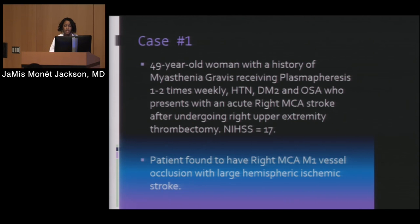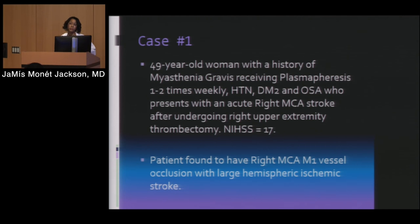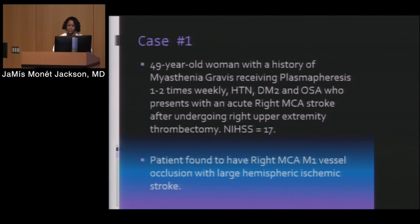Case one: a 49-year-old woman with a history of myasthenia gravis. She received plasmapheresis one to two times a week. She also had key risk factors for stroke — hypertension, diabetes, and obstructive sleep apnea. She presented with what we found to be a right MCA stroke, with multiple consistent symptoms: unable to move her left side, neglecting the left side, and sensory changes. Imaging found a right MCA M1 middle cerebral artery vessel occlusion and ischemia.